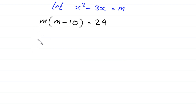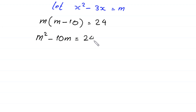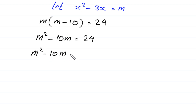Expanding: m times m gives m squared, and m times negative 10 gives negative 10m, equal to 24. Moving 24 to the left-hand side, this equation becomes m squared minus 10m minus 24 is equal to 0.